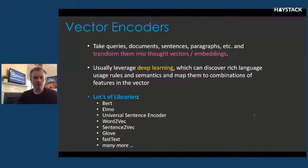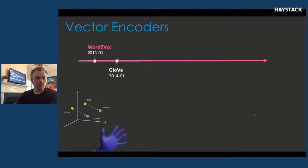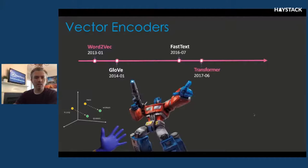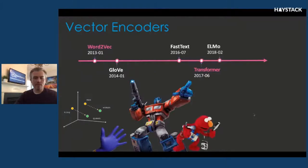There are lots of different libraries that do this. Word2Vec came out in 2013 and sort of took the NLP world by storm. GloVe came out about a year later and improved upon what Word2Vec could do. FastText a few years later. Then in 2017 the paper "Attention is All You Need" came out to introduce transformers, which took us a generation beyond what Word2Vec and the others did. Whereas Word2Vec came up with a static representation of a vector for a word, transformers took the idea of context into consideration, so that words and phrases could have different meaning within the context in which they appeared. Shortly thereafter we got ELMo, the universal sentence encoder, ULMfit, and then BERT.